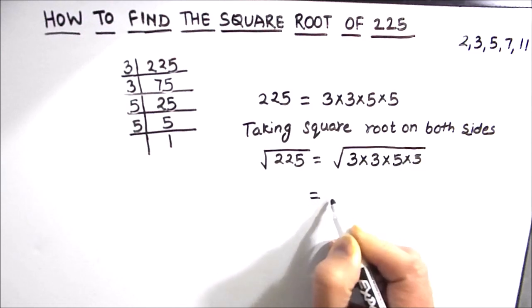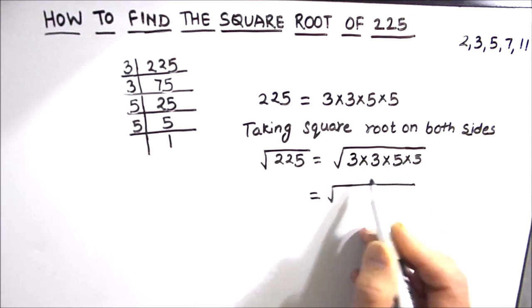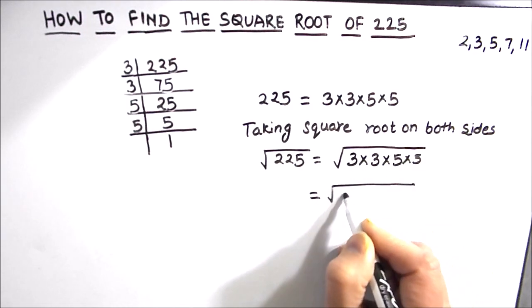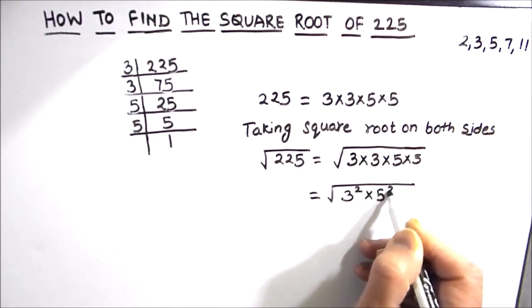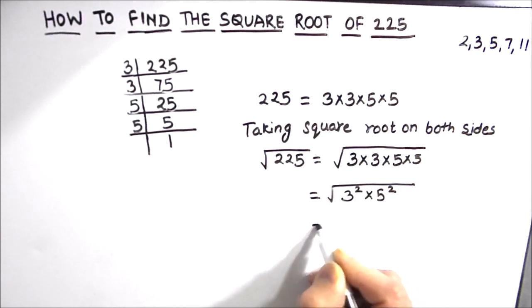Now as we are finding the square root we can write these numbers in exponents form as squares. So this is going to be 3 square times 5 square, and square root of a square number is the number itself.